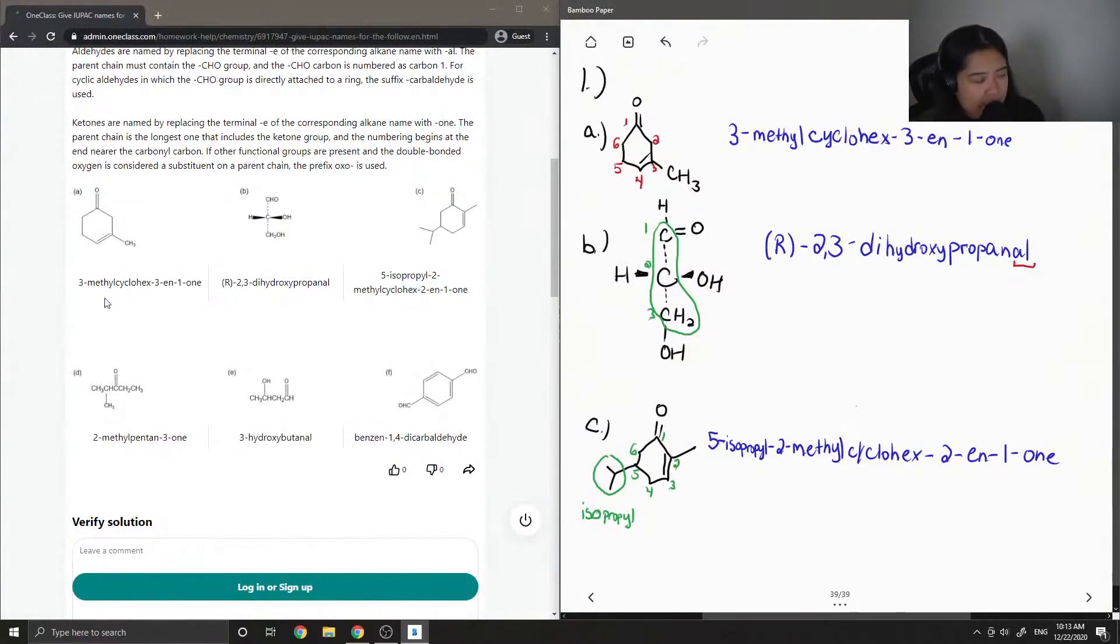The parent chain is the longest one that includes the ketone group, and numbering begins at the end nearer to the carbon-0 compound. If other functional groups are present, the double-bonded oxygen is considered a substituent on a parent chain. The prefix oxo is used. Let's look at the three that we did. The junior tutor also got 3-methyl-cyclohex-3-en-1-one. For B, they got (R)-2,3-dihydroxypropanal. C, 5-isopropyl-2-methyl-cyclohex-2-en-1-one.